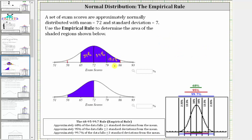Which means the area of the shaded region as a percentage is 34% plus 34% plus 13.5%, which is equal to 81.5%. So since we are asked to give the area as a percentage, we enter 81.5, but often the area is expressed as a decimal — 81.5% is also equal to 0.815.